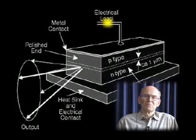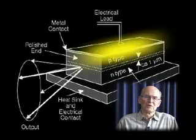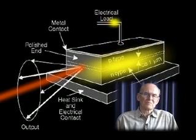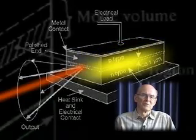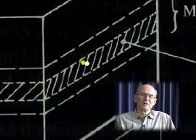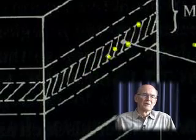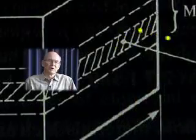And you pass a current through the diode that populates the space inside the junction with electrons and holes. And these recombine and produce light, which is bounced back and forth between the mirrors.